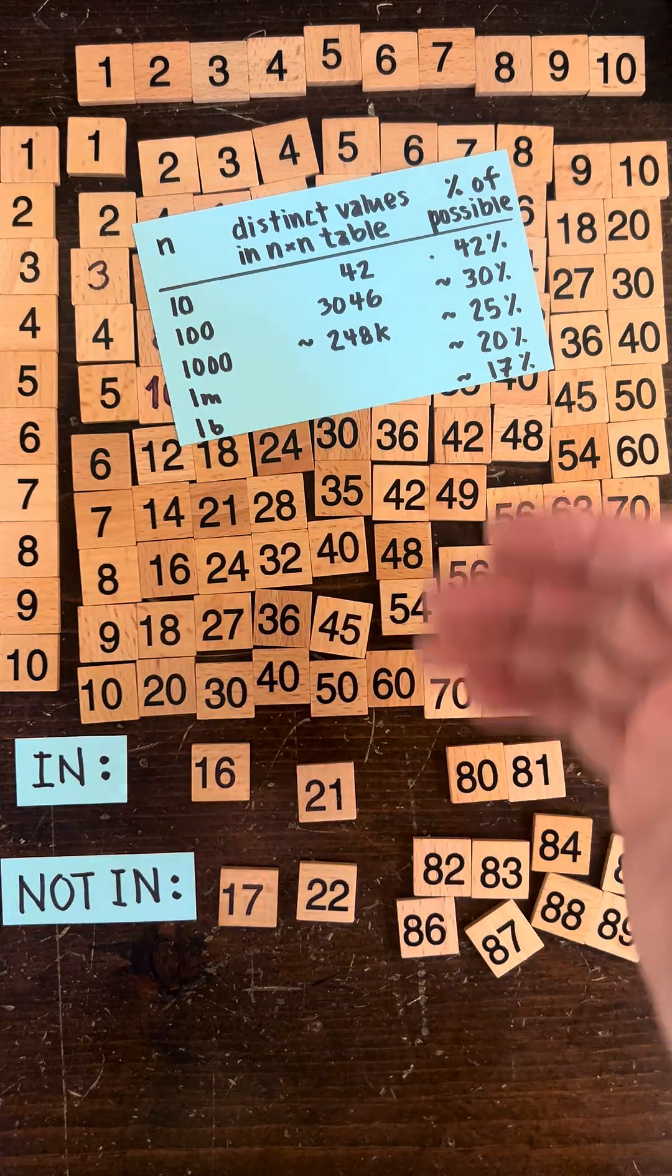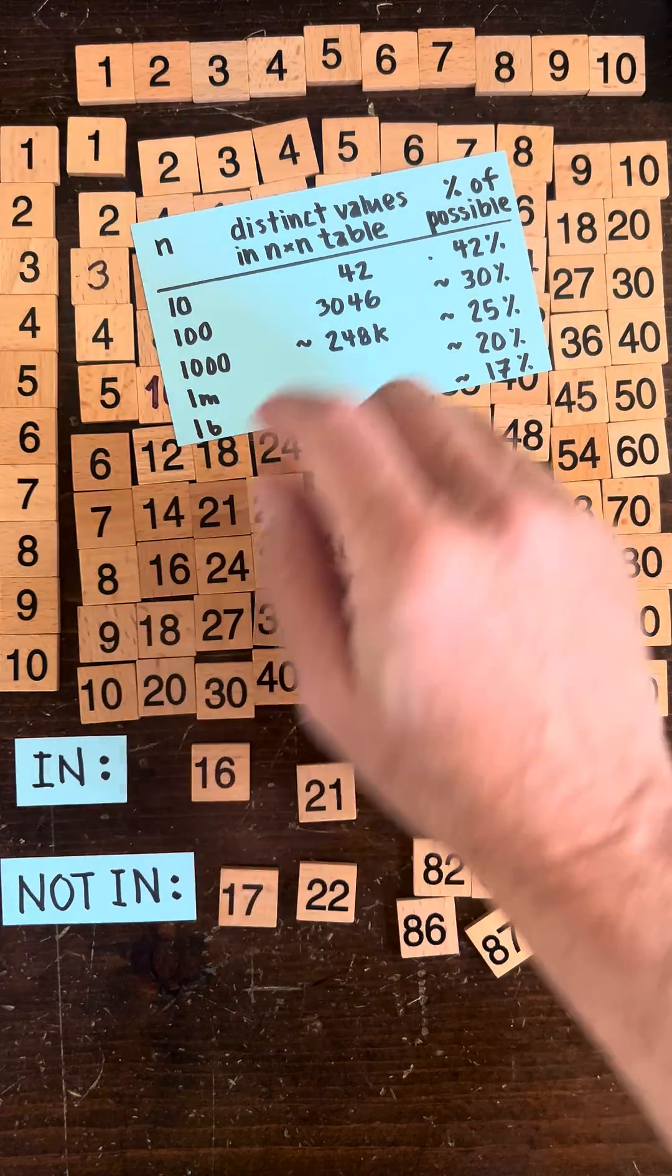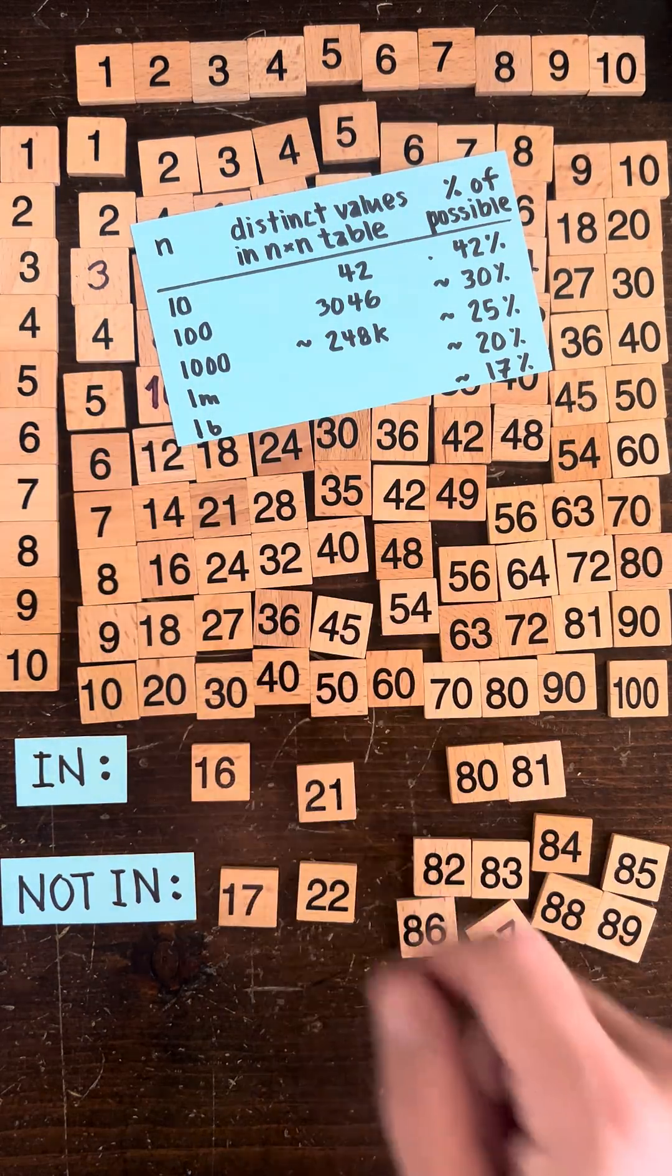Now maybe half is about the right number because the values here are mirrored by the values here. So 5 times 1 is the same as 1 times 5.